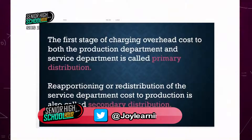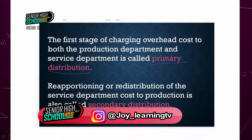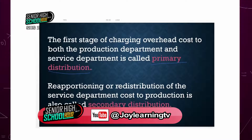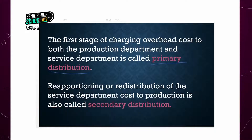The process we go through to charge the service department cost to the production department is termed redistribution. The first stage of charging overhead costs to both the production department and the service department is the primary distribution. Last week, we looked at how we allocate or apportion costs to the various production departments and the service department. This week, we are going to look at how we can redistribute the service department costs to the production department, so that at the end of the day we know the total costs incurred by the production department.